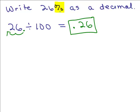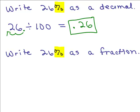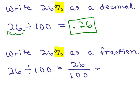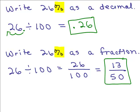Now, what if I wanted to write 26 percent as a fraction? We do the same thing. 26 percent means 26 divided by 100, which is just 26 over 100. Then that reduces — dividing the top and bottom by 2 gives you 13 fiftieths. So that's how to write 26 percent as a fraction. Notice that 26 divided by 100 is 0.26, which you read as '26 hundredths' — and there you see it written as 26 over 100, which is 26 hundredths. A roundabout way is to first write it as a decimal and then rewrite that decimal as a fraction, or you can go directly.